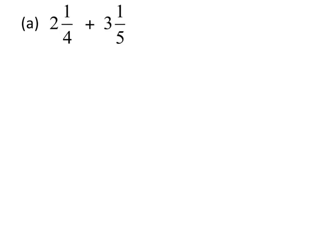Question 1 in the non-calculator is adding together two mixed numbers. The best way to do that is first of all by adding the whole numbered parts. So we have our 2 plus the 3 which gives us 5.